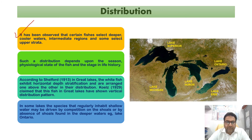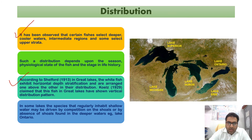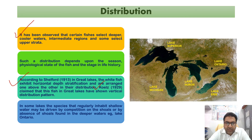The physiological state of the fish and the stage in their life history also determine distribution. According to Shelford (1913), studying the Great Lakes, it was observed that whitefish exhibit horizontal depth stratification and are arranged one above the other in their distribution. Cools (1929) claimed that this fish in the Great Lakes has also shown a vertical distribution pattern.